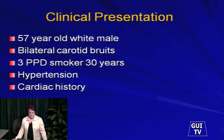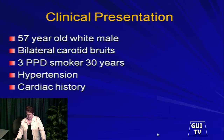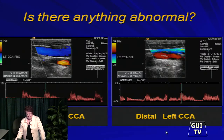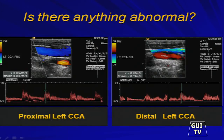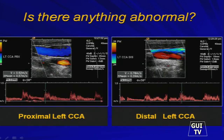You have a 57-year-old male with bilateral carotid bruits and lots of risk factors. Remember how to read a waveform. Here's the proximal left common carotid artery, and over here is the waveform from the distal common carotid artery. You need to ask yourself: is this what I would expect? Is there anything wrong?